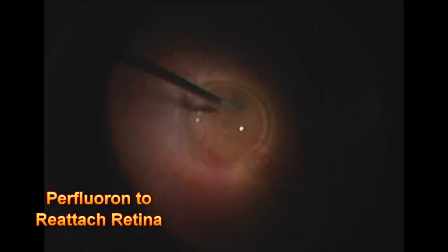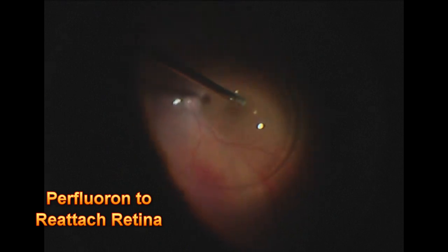Now that the vitrectomy has been completed and the tear has been marked, the eye is being filled with perfluoron. There you see the perfluoron which is a heavier than water liquid. It can be used to gently re-attach the detached retina. It's especially helpful in cases such as this where there's a giant retinal tear because it helps stabilize the retina as it attaches it.